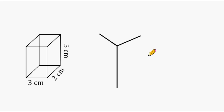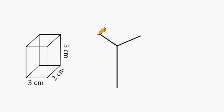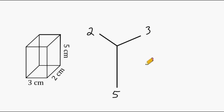When calculating the surface area of any rectangular prism, the first thing you can do is draw what looks like a letter Y. Each one of these lines represents each one of the three dimensions of the rectangular prism — the length, the width, and the height. Let's take our shortest line and write our smallest number, which is 2, then put a 3 here and a 5 here. It really doesn't matter which order you write these numbers — you will end up getting the same answer anyway.